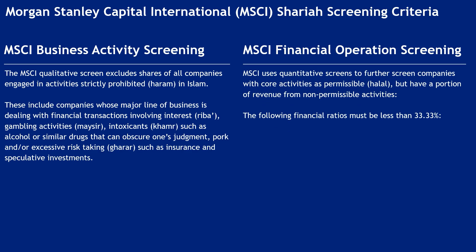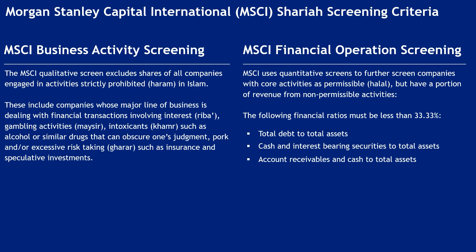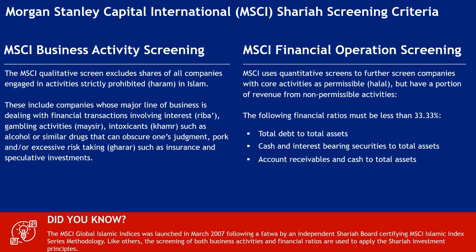MSCI Financial Operations Screening. MSCI uses quantitative screens to further screen companies whose core activities are permissible but have a portion of revenue from non-permissible activities. The following financial ratios must be less than 33.33%: total debt to total assets; cash and interest-bearing securities to total assets; and accounts receivable and cash to total assets. The MSCI Global Islamic Indices were launched in March 2007 following a fatwa by an independent Shariah board certifying the MSCI Islamic Index Series methodology.